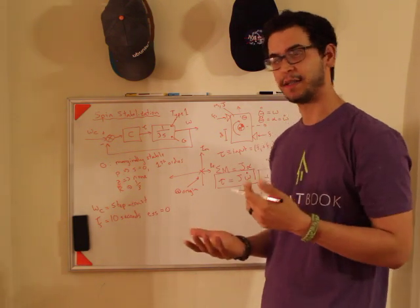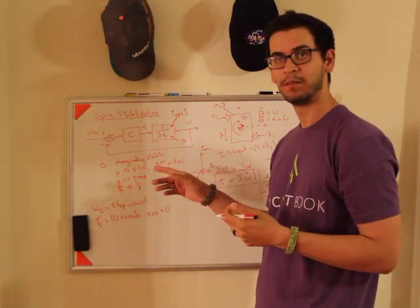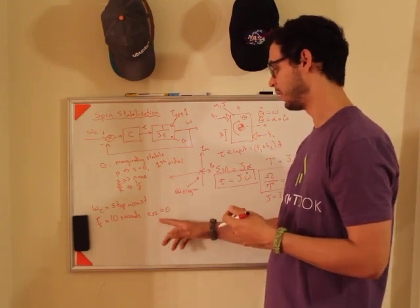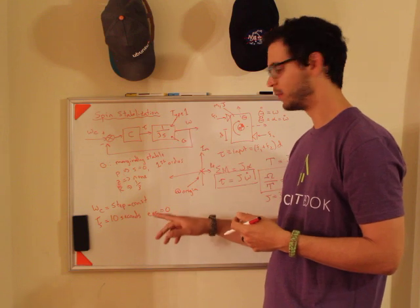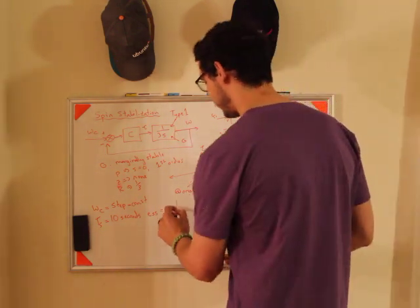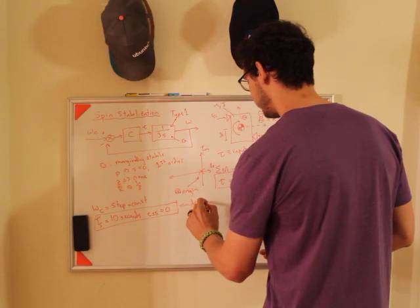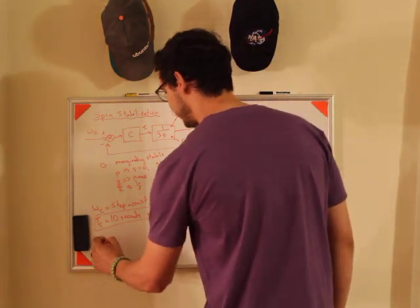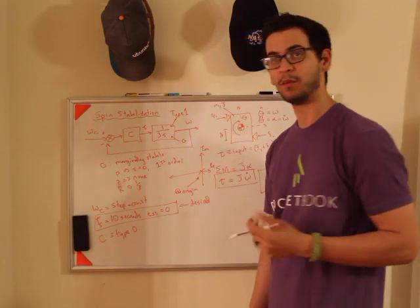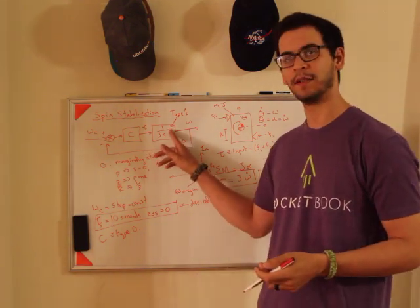So then the question becomes, what do you make c? Well, the nice thing about the fact that this system is marginally stable is that it has an integrator, which means that for a type one system, the steady state error is automatically zero. So this is desired, and it turns out that c can be type zero. And the reason why c can be a type zero system is because you already have a type one system in your plant.